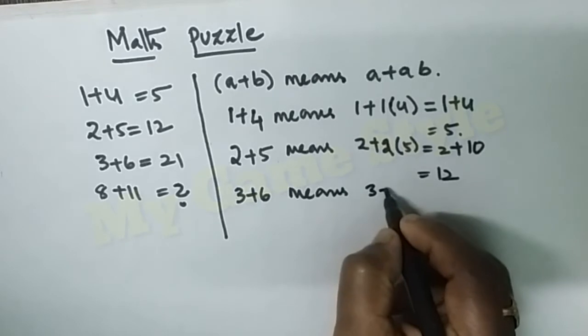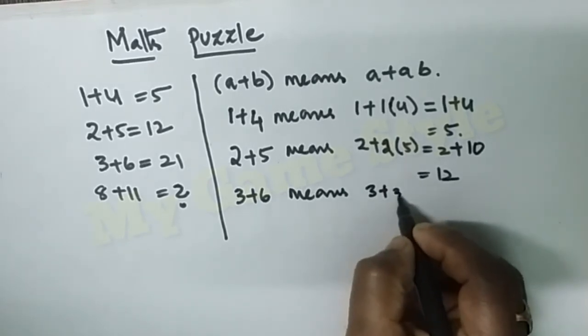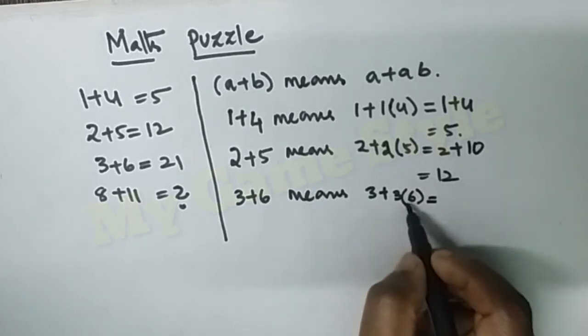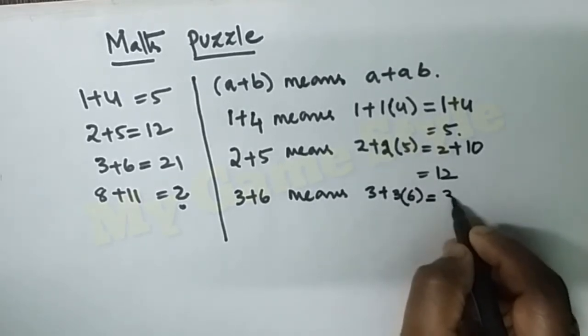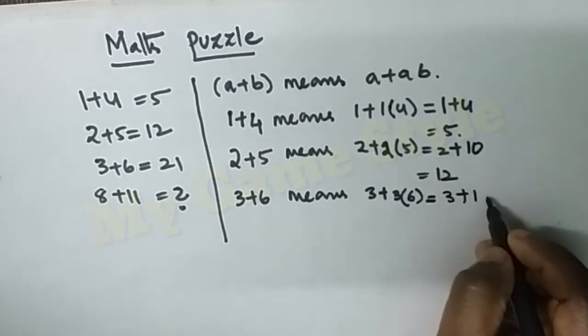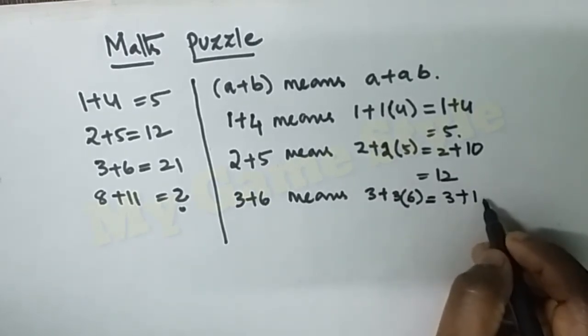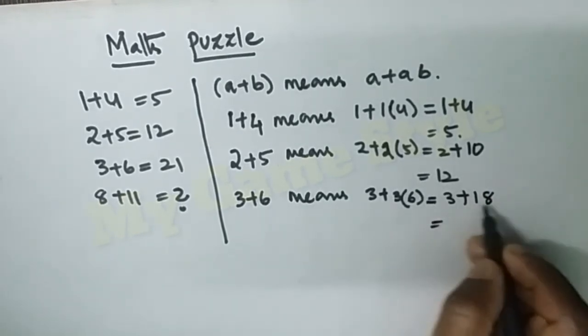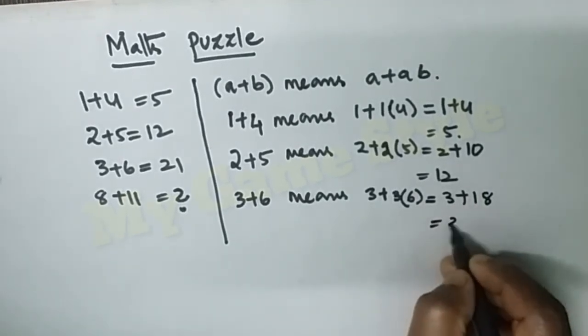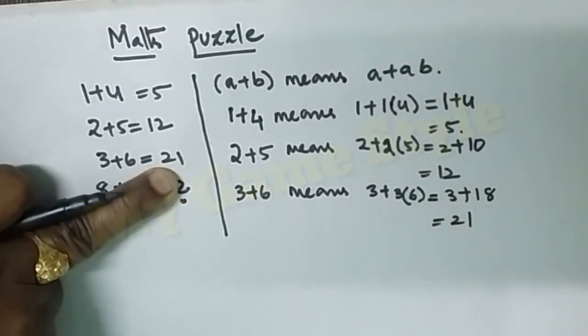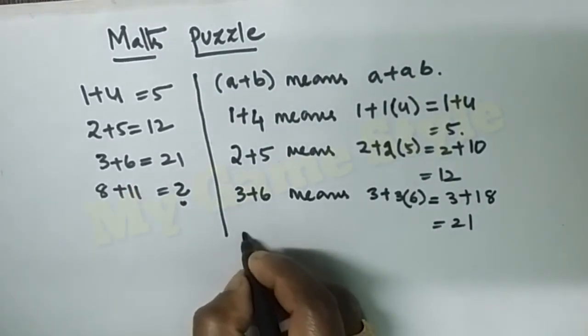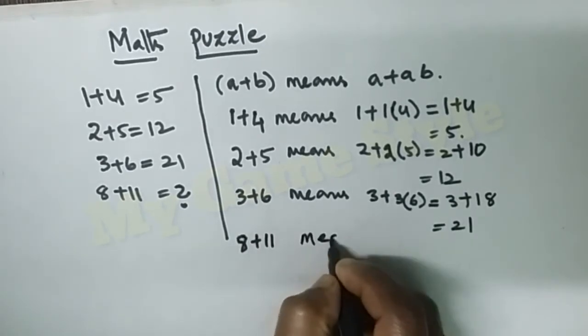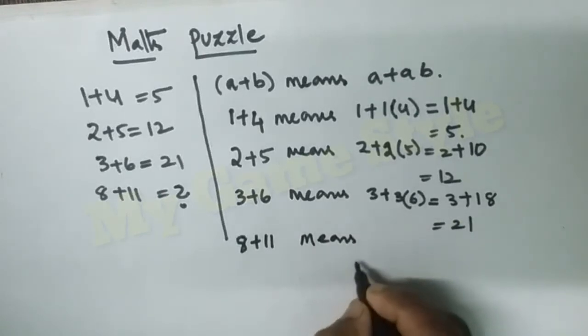Next, 3+6 means 3 plus 3×6. 3×6=18, so 3+18=21. This is how you got 21. Now 8+11 means 8...